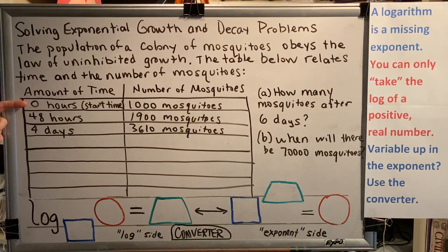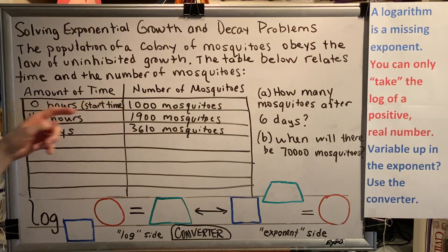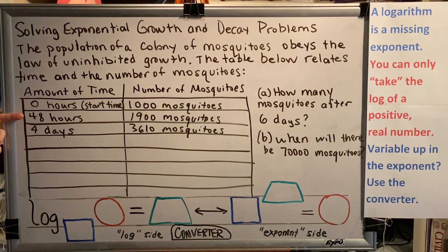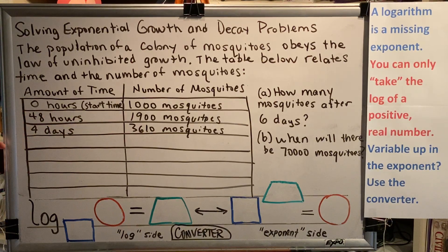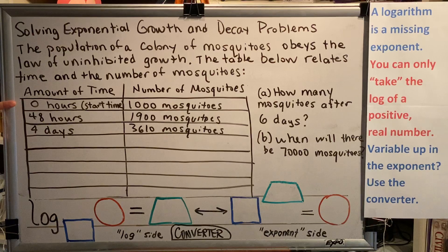We can see that at the start time, the first moment when we go out to measure the number of mosquitoes, we find that there are 1,000 mosquitoes. Then, after 48 hours, we find that there are 1,900 mosquitoes. And four days after the start time, we find that there are 3,610 mosquitoes.